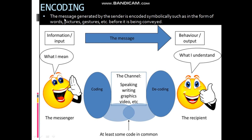Encoding. The message generated by the sender is encoded symbolically — such as in the form of words, pictures, gestures, etc. — before it is conveyed. Since the subject matter of communication is theoretical and intangible, passing it further requires the use of certain symbols such as words, accents, art, pictures, etc. Conversion of subject matter into these symbols is the process of encoding.